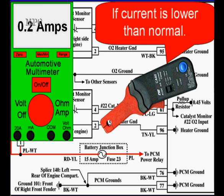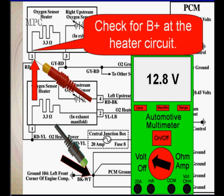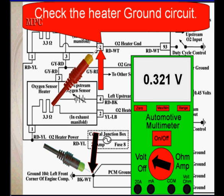First, we're going to check for B plus at the heater. Here, we're looking at 12.8 volts, which is battery voltage. We put our voltmeter on pin 1 and our ground lead on engine ground, battery negative. And we're also going to check the ground circuit.